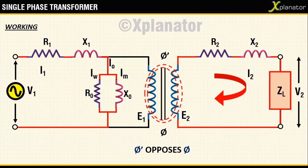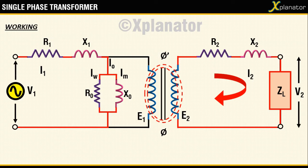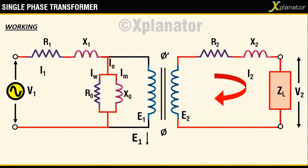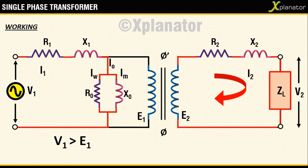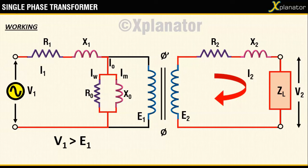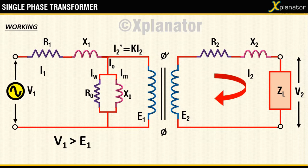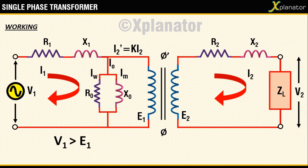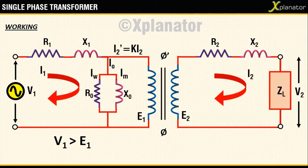This demagnetizing effect leads to a decrease in the primary flux which reduces the induced emf E1. So now this source voltage V1 has an upper hand over the back emf E1 which means the potential difference between V1 and E1 has increased. And hence V1 can now send more current in the primary circuit in the form of I2 prime. I2 prime is the reflected secondary current in the primary circuit. Hence it is given as K times I2 where K is the transformation ratio. This current counteracts the demagnetizing effects of secondary current I2.